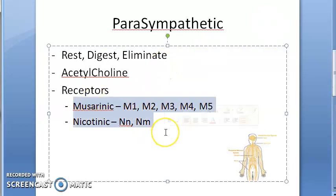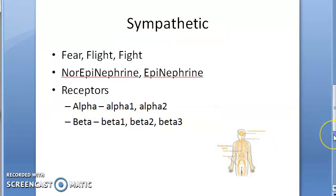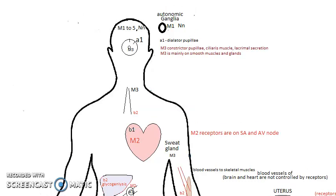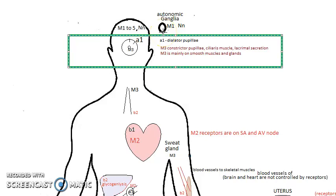Now, coming to the receptors — this is where it gets very confusing for students. Which receptors increase blood pressure? Which increase heart rate? That is why this video has been made. We have prepared a visual where receptor locations are mapped onto the human body itself, to tell you exactly where each receptor is located and what it does. Let's start with the eye.